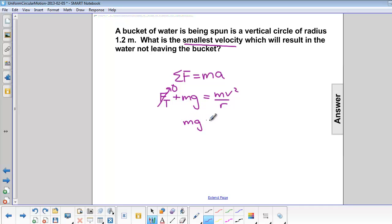So we have mg equals mv squared over r. Divide both sides by m and we are left with g equals v squared over r. Multiply both sides by r. Rg is equal to v squared. Take the square root of each side, so that v is equal to the square root of r times g.